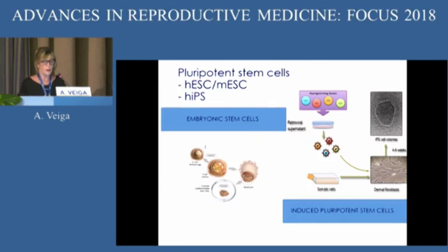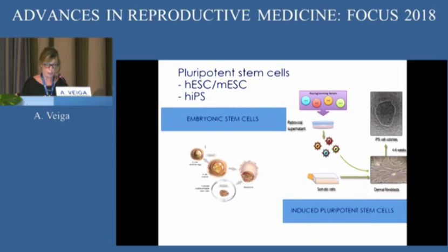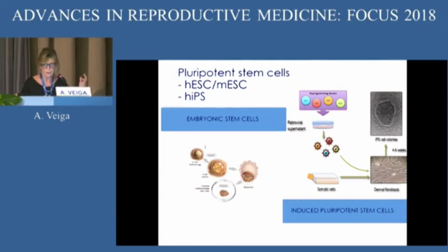Let me first introduce which kind of cells I'm talking about. These are constituted by the group of pluripotent stem cells: embryonic stem cells — both human and mouse — and IPS cells. Embryonic stem cells come from embryos; they were generated for the first time in 1998, and they are the gold standard of pluripotency.